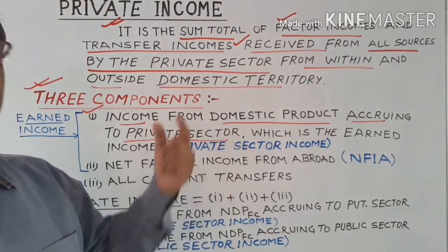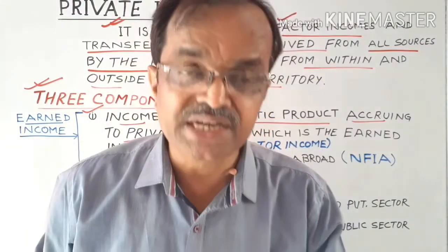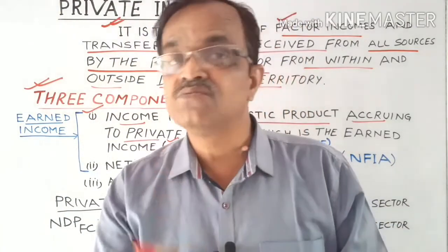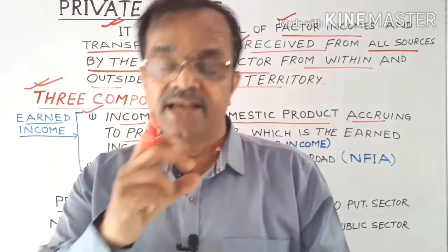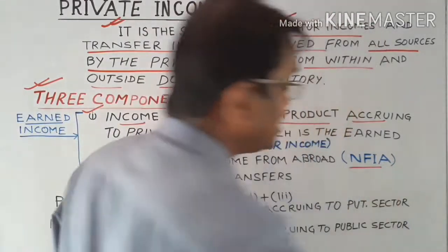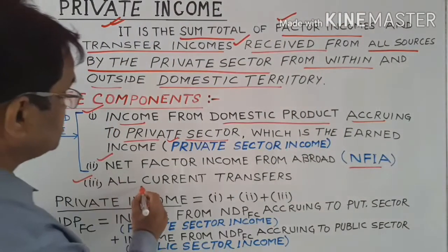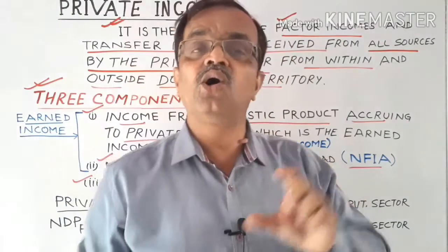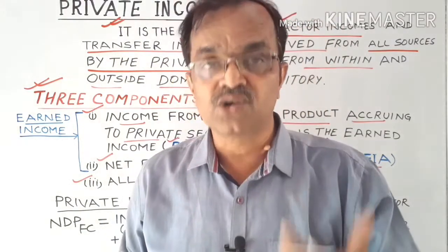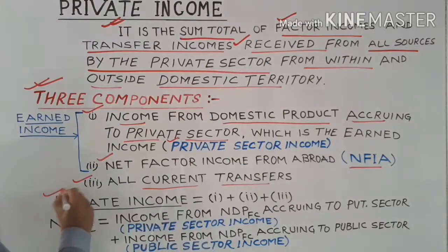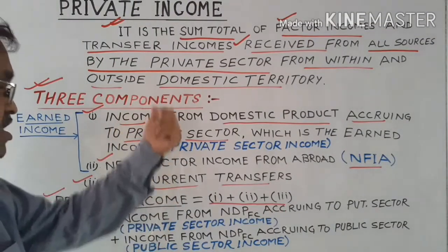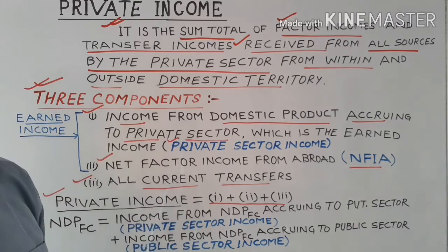The first component is private sector income — income from domestic product, that is NDP at FC, accruing to the private sector. The second component is Net Factor Income from Abroad (NFIA). The third component is current transfer income. The sum total of all three components gives us private income — the income received by the private sector.